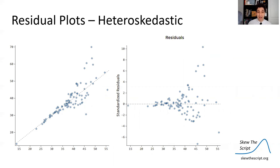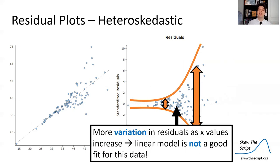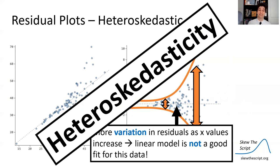Finally, one last deviation from a good linear fit is called heteroscedasticity — my favorite word in statistics. In the residual plot, there's a funneling effect: the variation around the least squares regression line gets larger as the X-values increase. We start with little variation and a stronger correlation, then have weaker correlation with larger variation. There's more variation in residuals as X-values increase, so the linear model is not a good fit. Say it five times fast — I dare you, it's really hard.